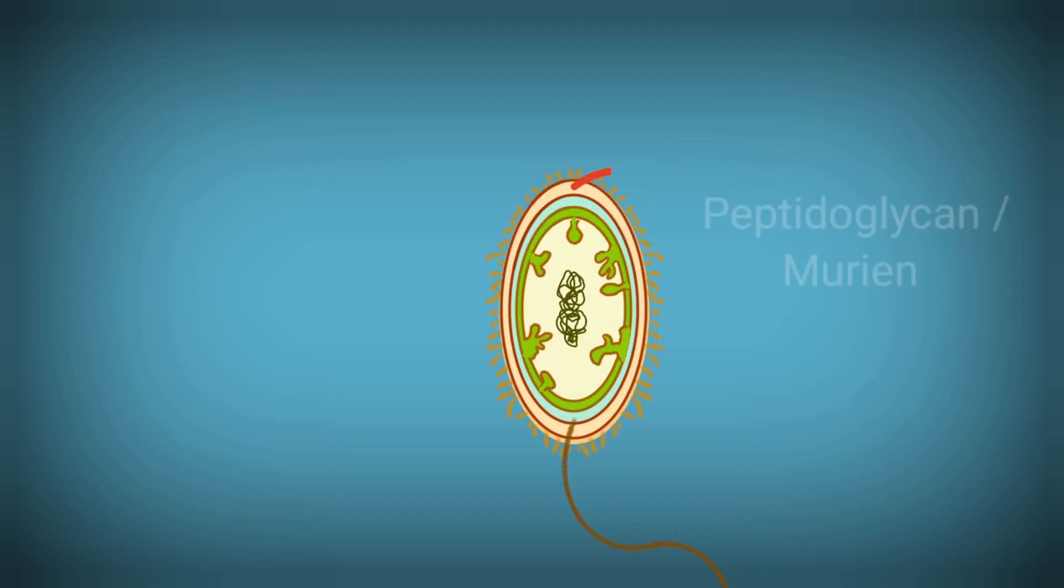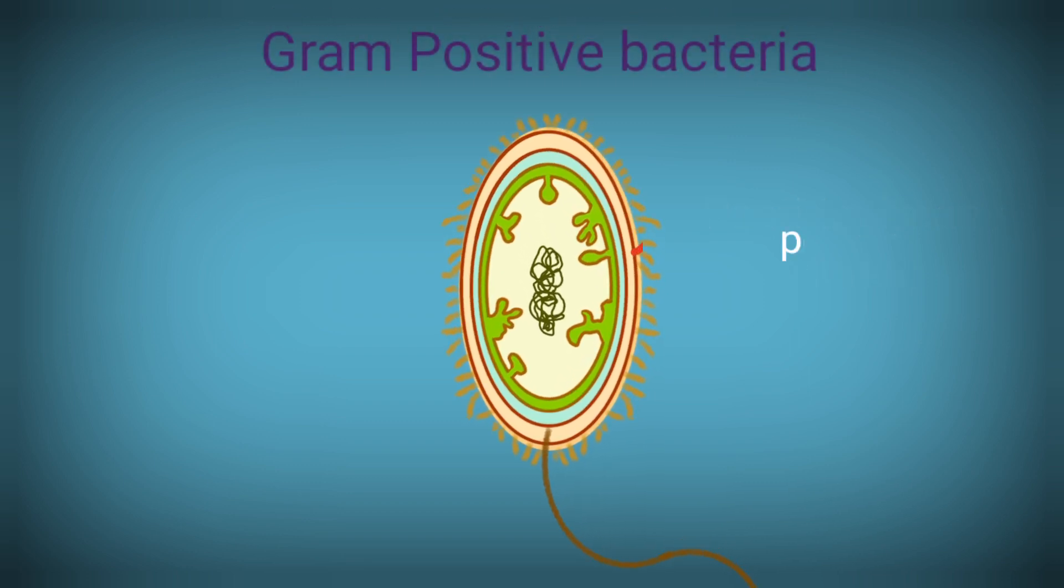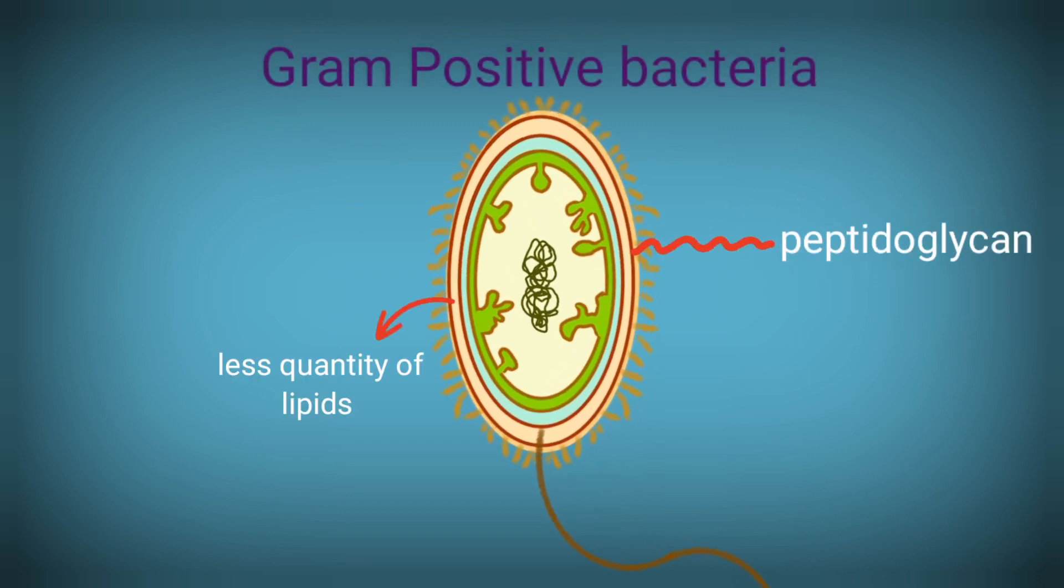Bacterial cell wall is made up of peptidoglycan or murine. In Gram-positive bacteria, cell wall is single-layered and thick. It is made up of peptidoglycan.